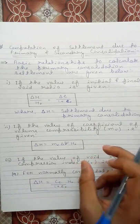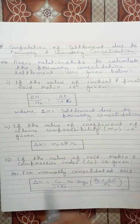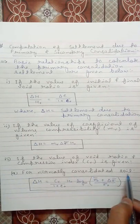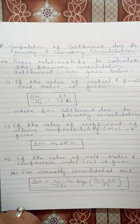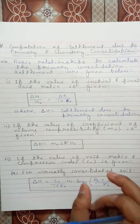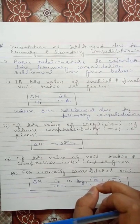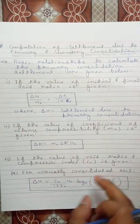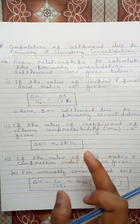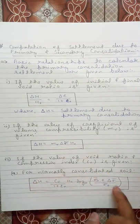If the value of void ratio and compression index Cc are given, we use a third relationship, which is valid for normally consolidated soil. A normally consolidated soil is one where the stress presently acting on the soil element is the maximum stress it has ever been subjected to in its stress history. If the present stress is less than the past maximum stress, the soil is over-consolidated.